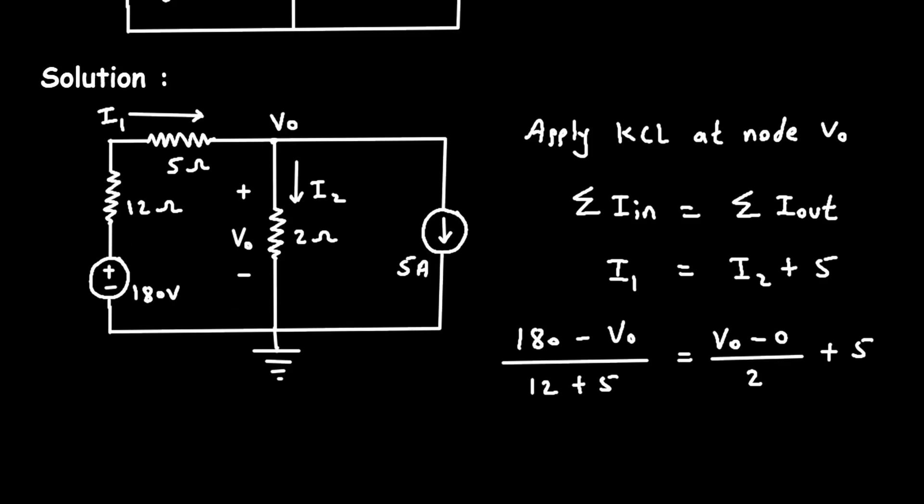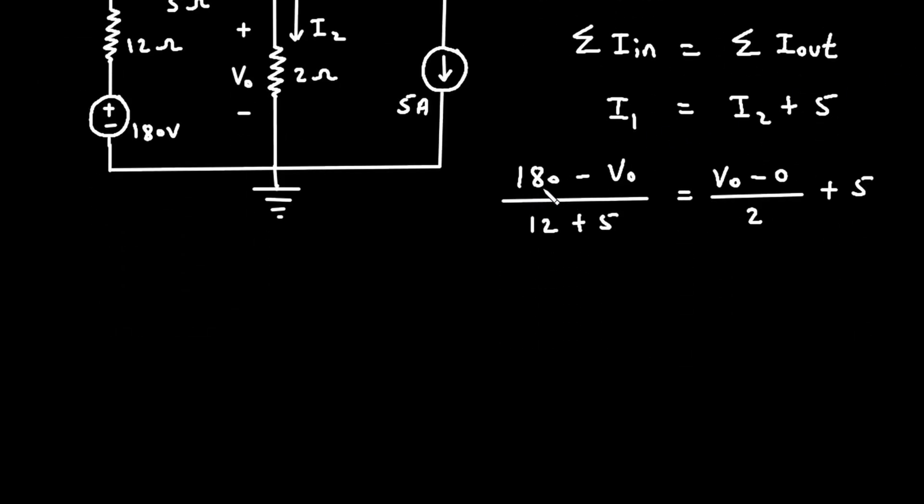Let's simplify this. So, 180 divided by 17 minus VO divided by 17. If we take this on left side, it will be minus VO divided by 2 is equal to 5.